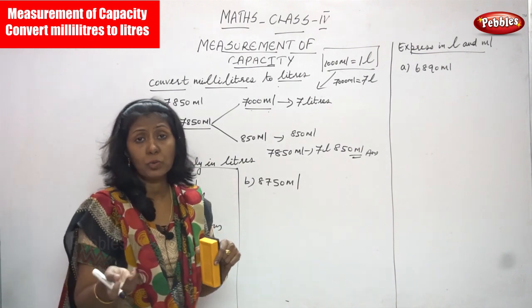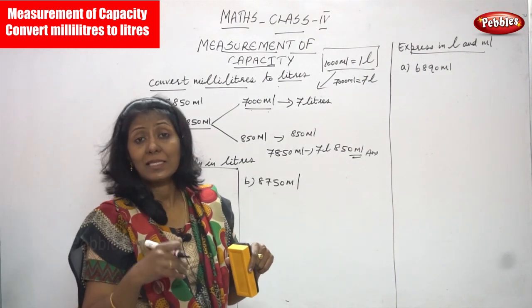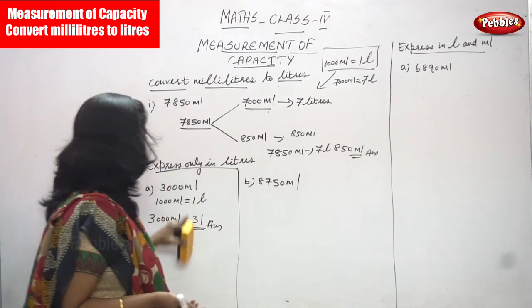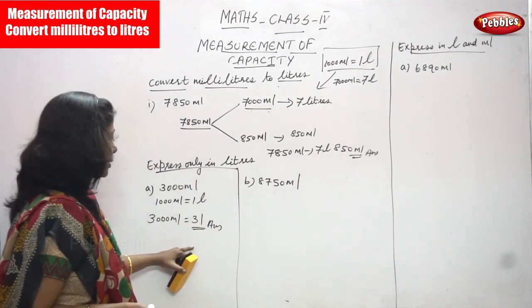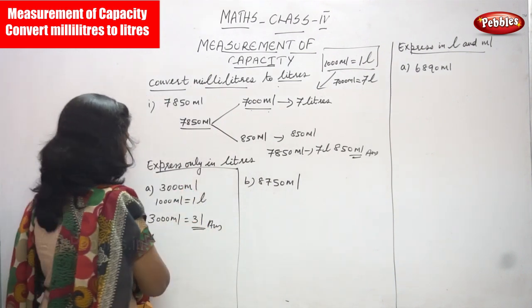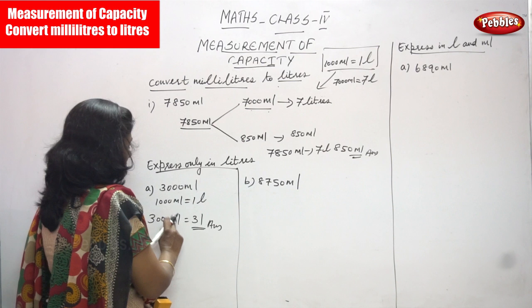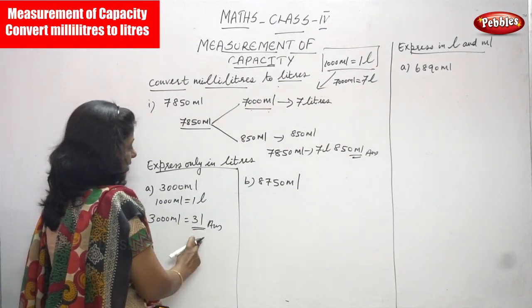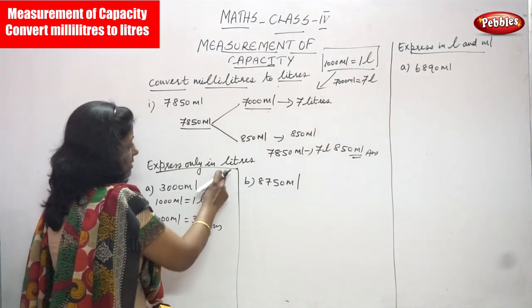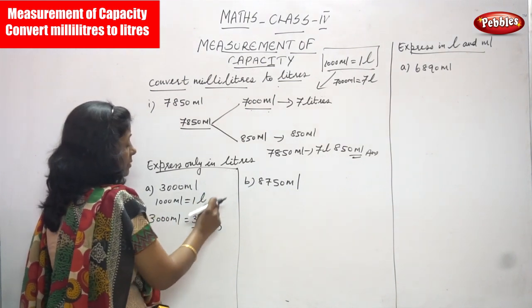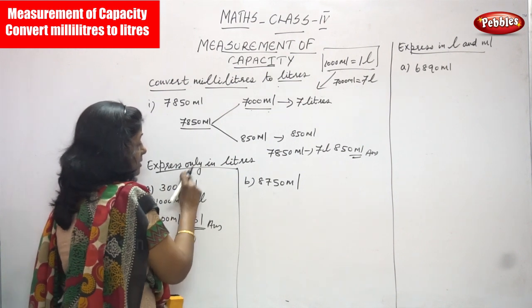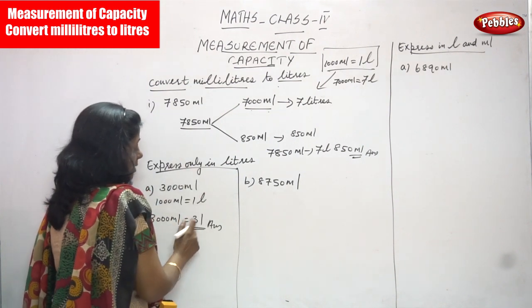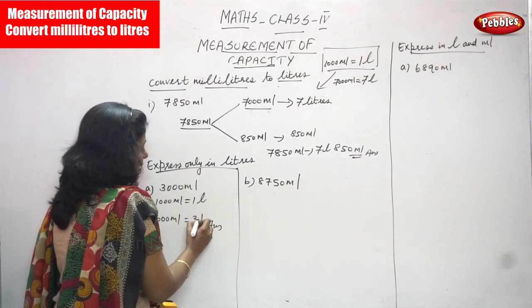3000 ml is converted into liters. 1000 ml equals 1 liter, 2000 ml equals 2 liters, and 3000 ml equals 3 liters. The answer must be given in liters — the answer is three liters.